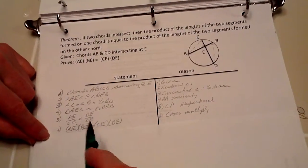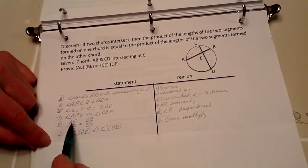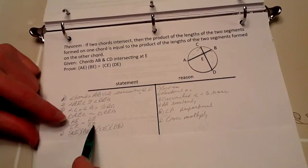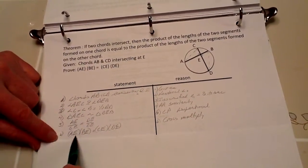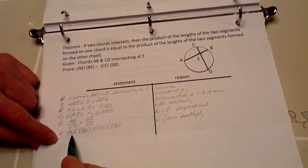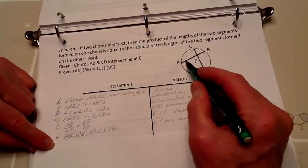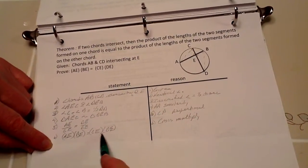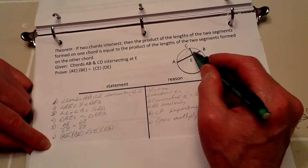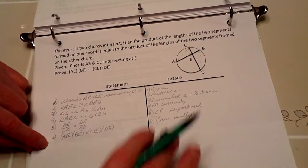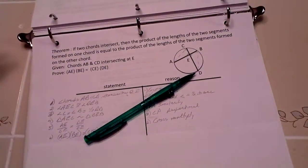Then just by simple cross-multiplying, we have proven that the product of the segments AE and BE is going to be equal to the product of CE and DE, and therefore we have just proven our theorem. Thank you.